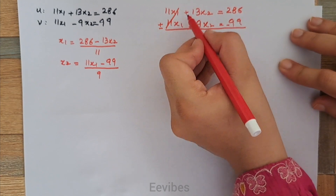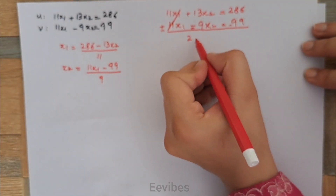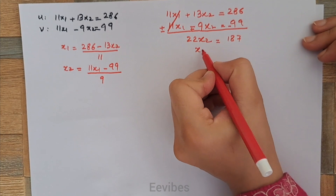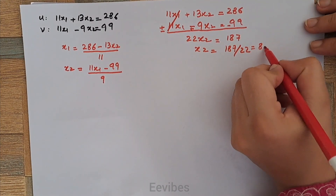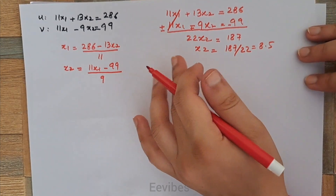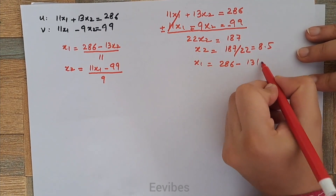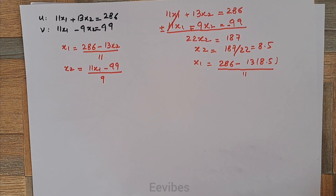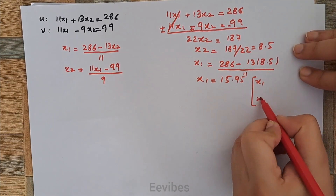Since the two coefficients are equal, I have subtracted the two equations. 13 plus 9 is equal to 22, so it becomes 22x2, equal to 286 minus 99, which becomes 187. So x2 is equal to 187 divided by 22, which equals 8.5. Substituting into the first expression, x1 equals 286 minus 13 times 8.5, divided by 11, which results in x1 equal to 15.95.